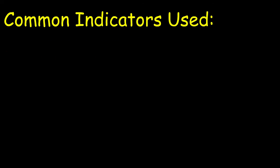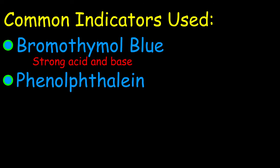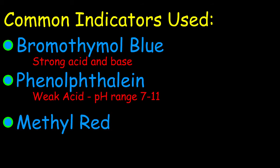Common indicators are Bromothymol blue, which is used with a strong acid and a strong base. Phenolphthalein, which is used with a weak acid because it works in pH range 7 to 11. Methyl red, which is used with a weak base because it works in pH range 3 to 7.